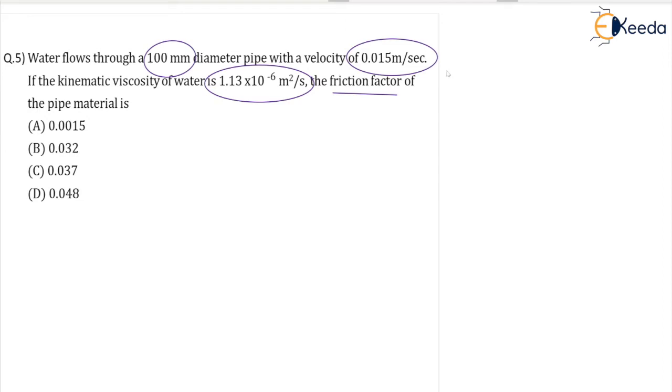Given data: diameter of pipe d = 100 mm, velocity v = 0.015 m/s, kinematic viscosity of water ν = 1.13 × 10^-6 m²/s. We need to find the friction factor 4f.